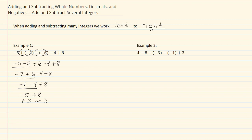In example two, again, I want to get rid of any double signs. So those would be my double signs there. And so if I rewrite this, I'm now going to have four minus eight minus three plus one plus three.